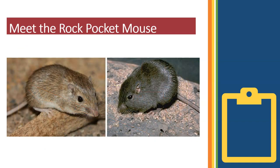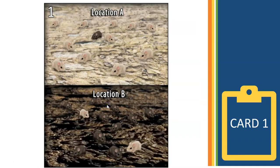In a moment I'm going to show you four images of the Sonoran Desert. Each image shows two locations, location A and B. For each card and each location, I want you to count and record the number of each type of mouse. Here's card one. For location A, how many light colored mice do you see? How many dark colored? Count and record this on your journal slip, then do the same for location B.